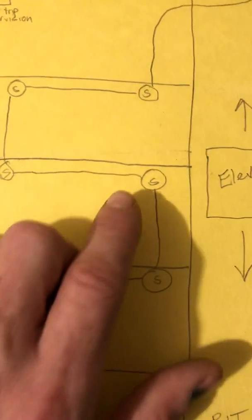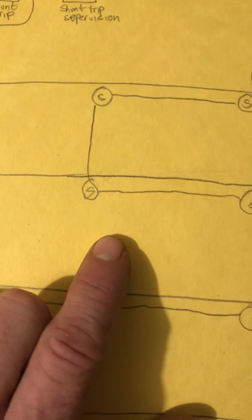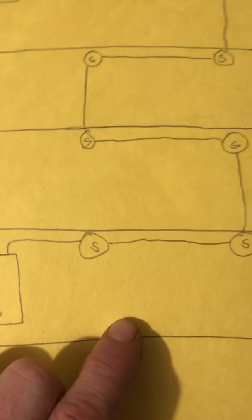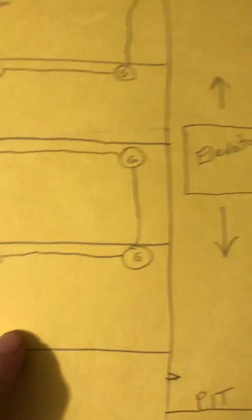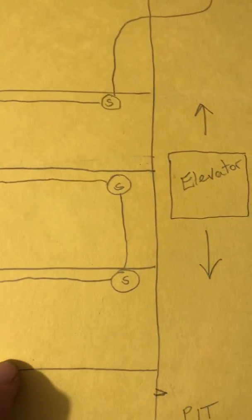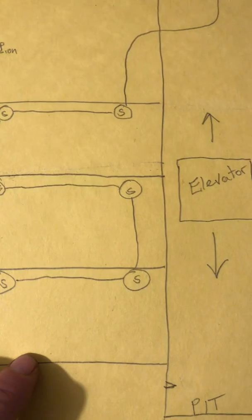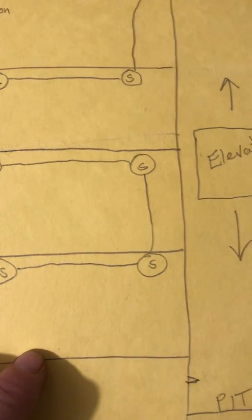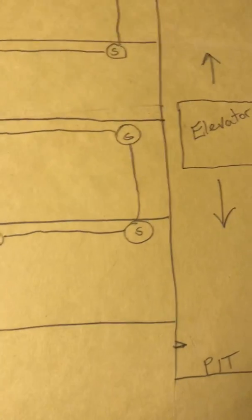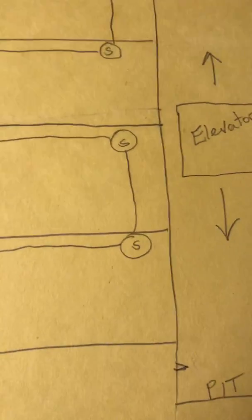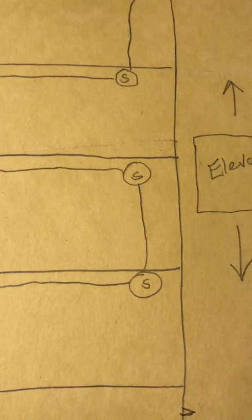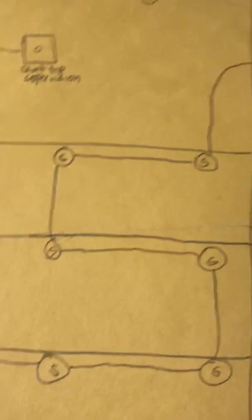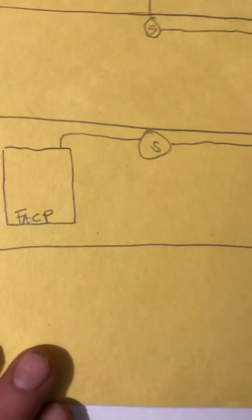Now on this, I didn't write it down, but this would be our alternate level for this example and this would be the designated level. That would be the two different levels that the elevator would recall to in the event of a fire or smoke, anything to put the fire alarm control panel into alarm.